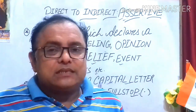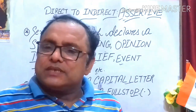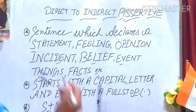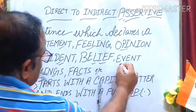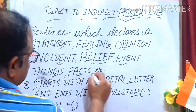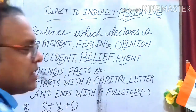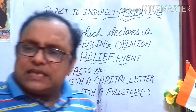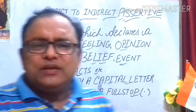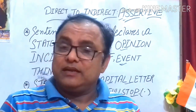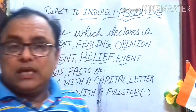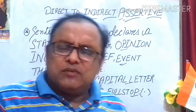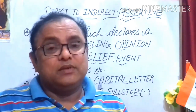First of all, let me share with you what is an assertive sentence. An assertive sentence is a sentence which declares a statement, feeling, opinion, incident, belief, event, things, facts, etc. For example, I say 'Amitabh Bachchan is a veteran actor' — this is a fact. This type of sentence is kept in the category of assertive or declarative sentence.